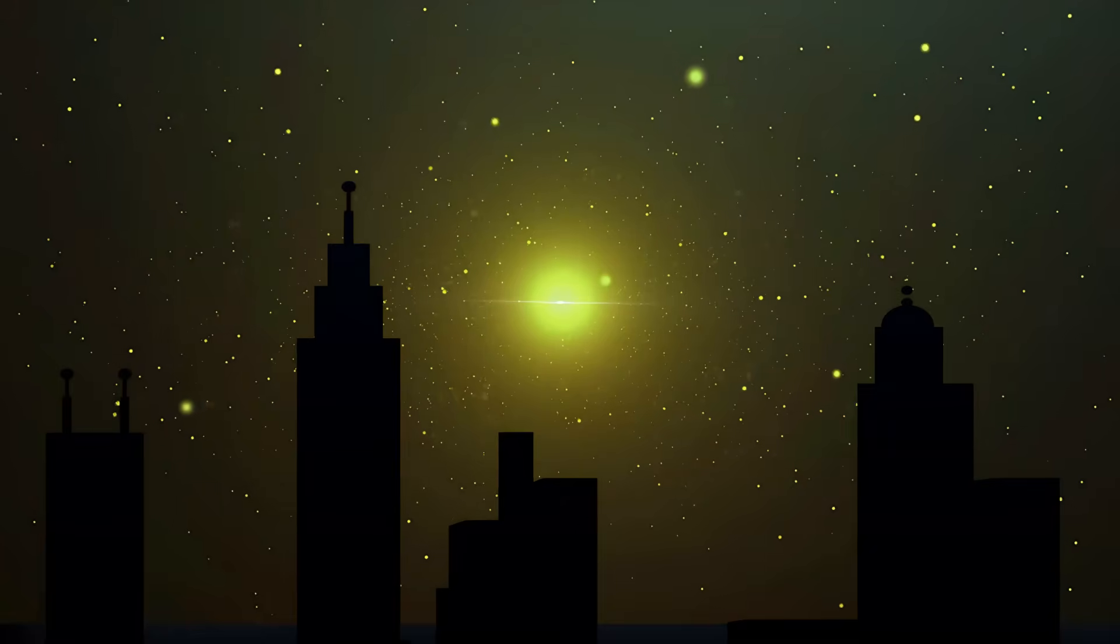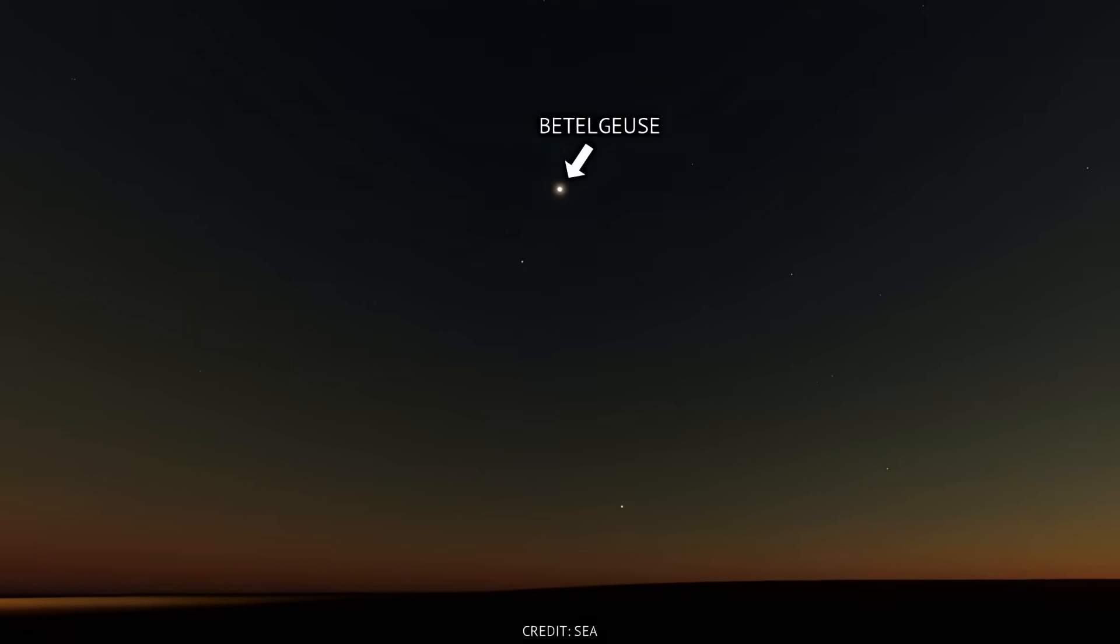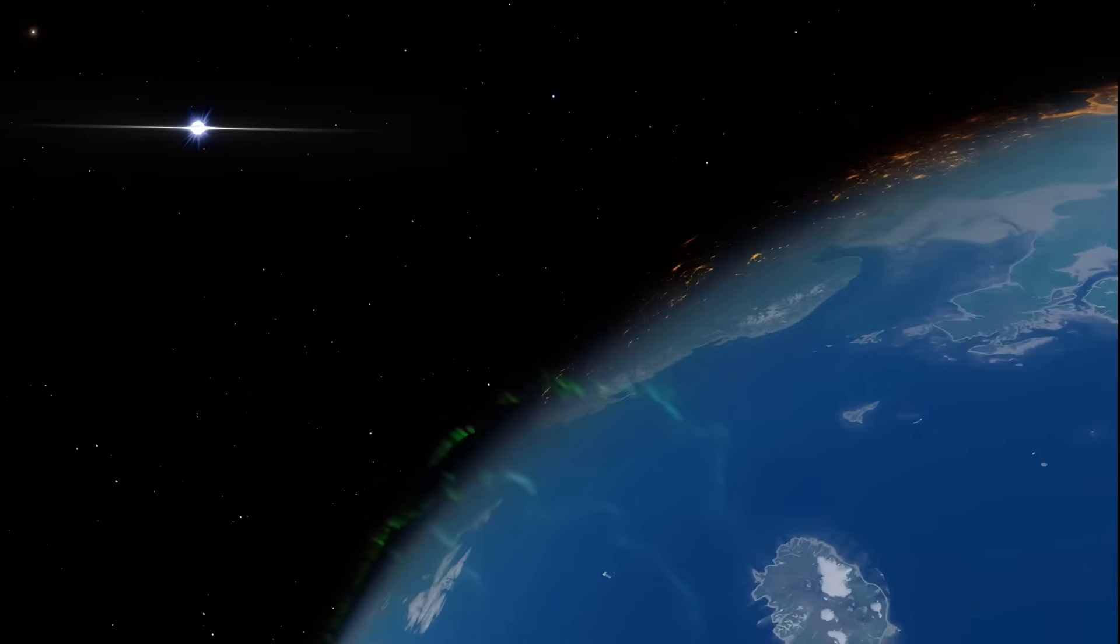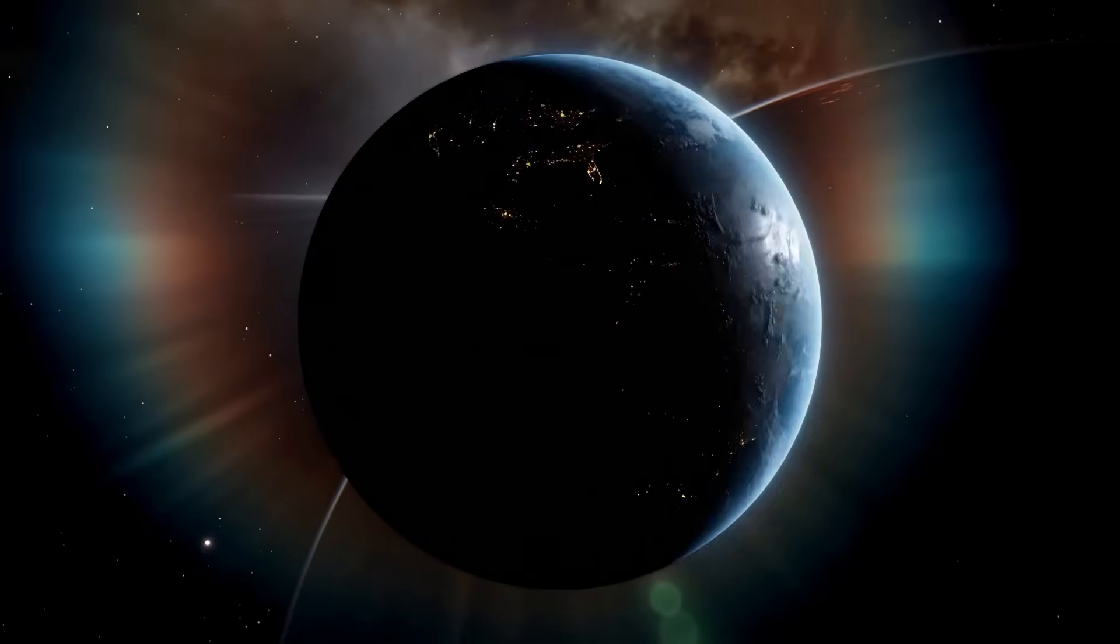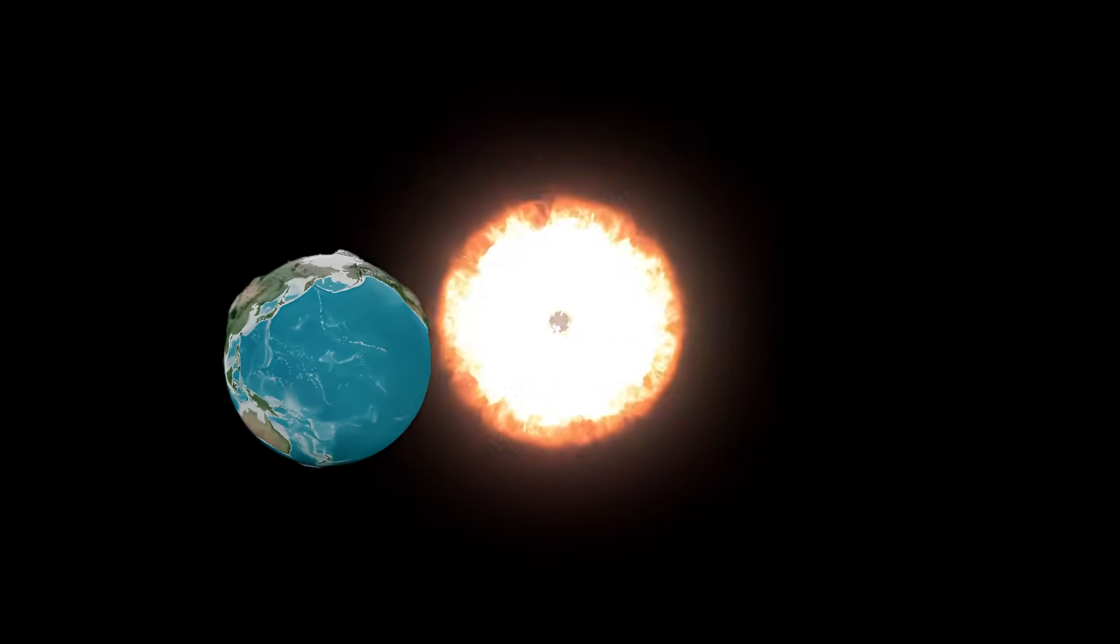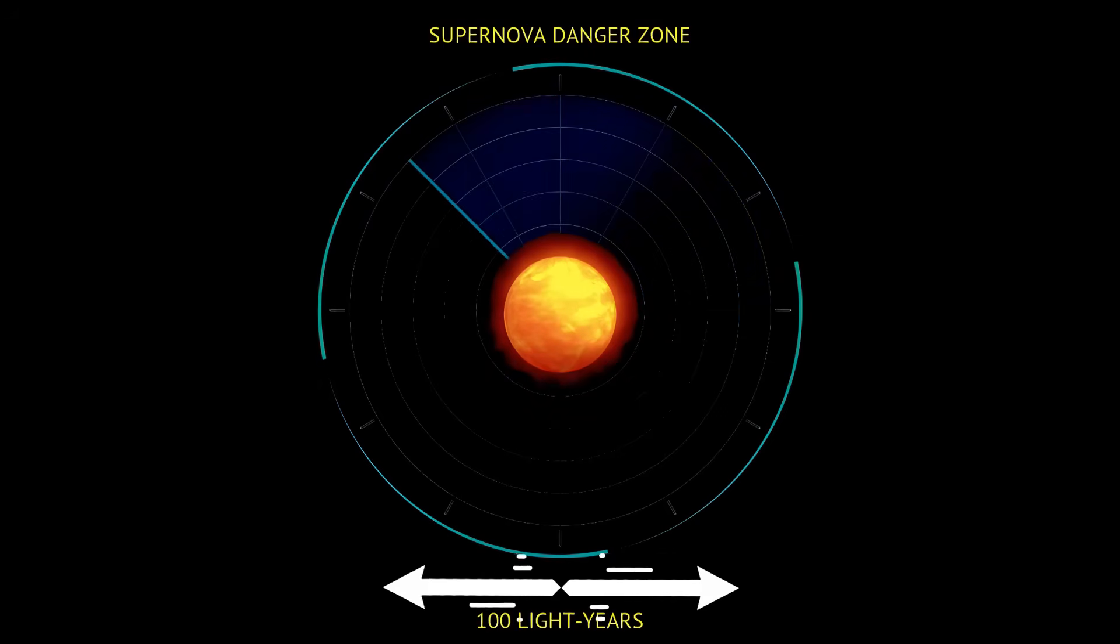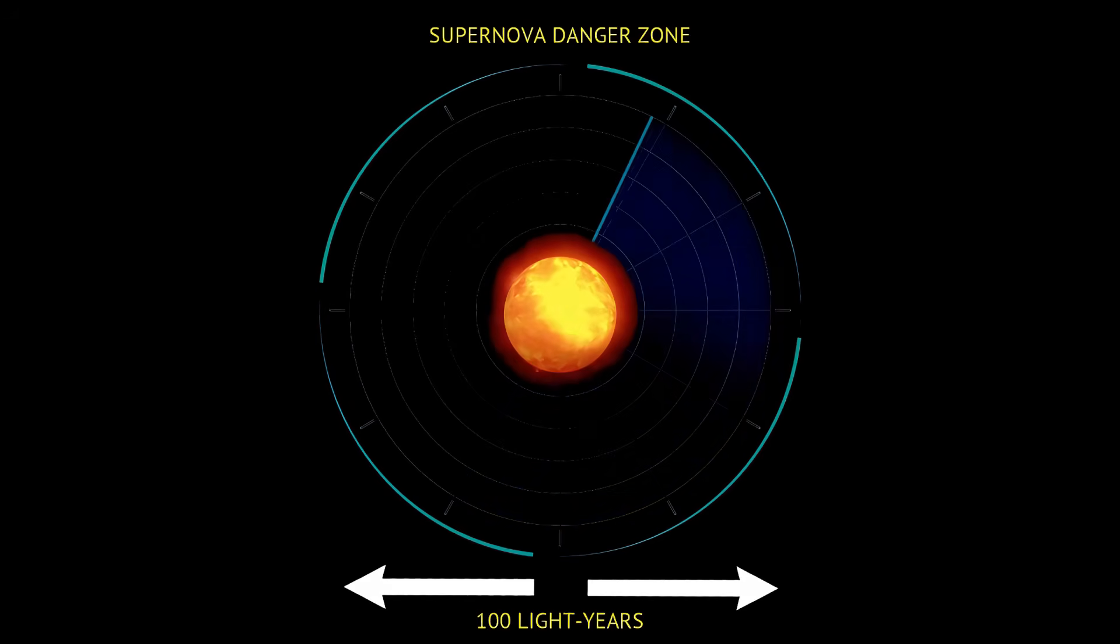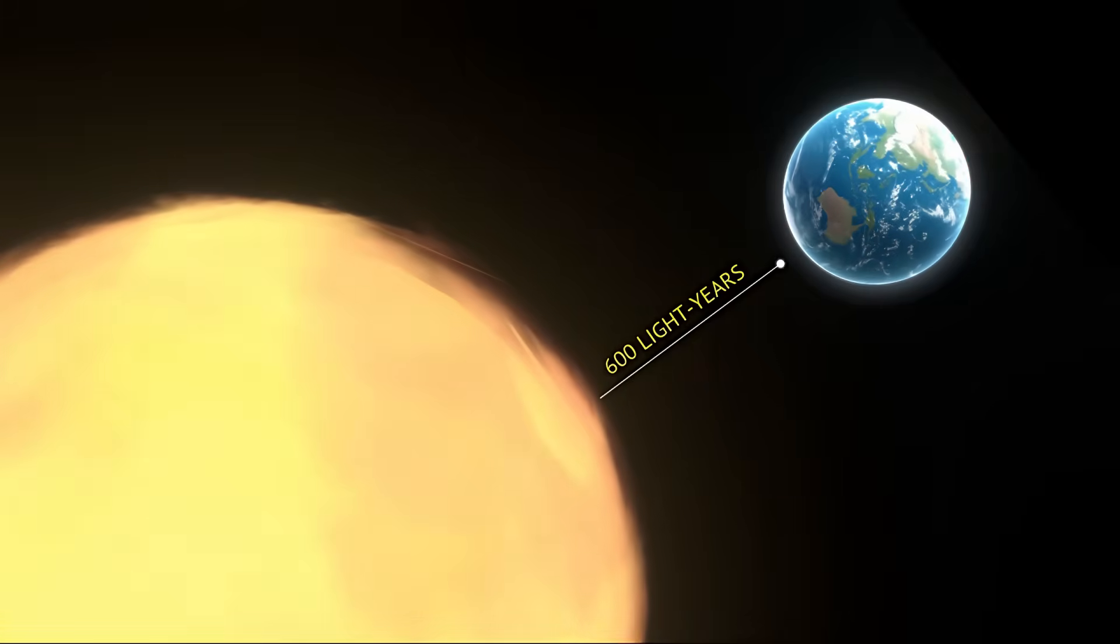This proximity means Betelgeuse's supernova would be incredibly bright, potentially outshining even Sirius, the brightest star in our night sky. And it would likely remain visible for weeks. However, will it pose any danger to Earth? A supernova occurring within a few tens of light years from Earth would have serious consequences, including harmful radiation exposure. The danger zone for these effects is estimated to be around 100 light years. Fortunately, Betelgeuse is beyond this range, so we are safe from harm.